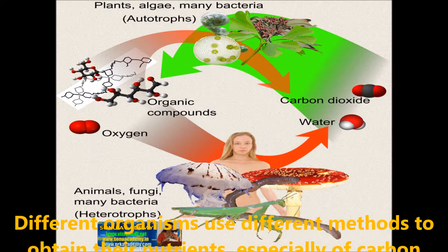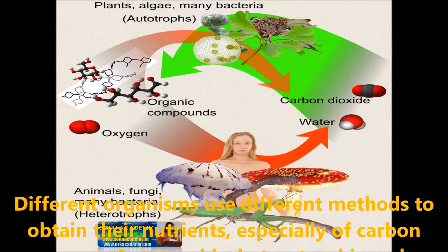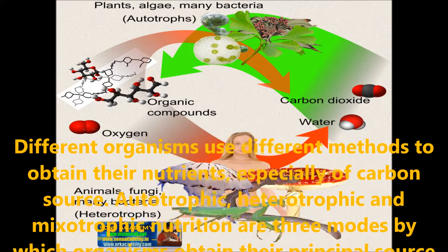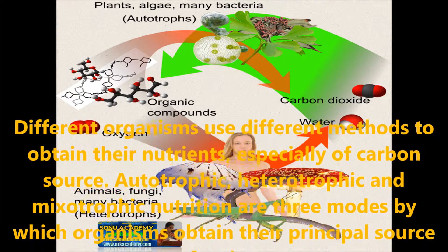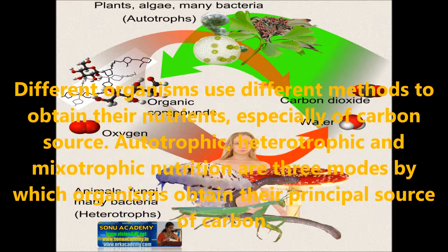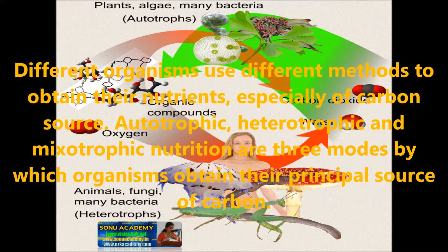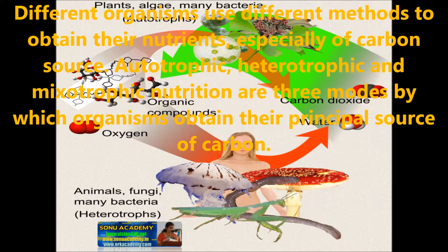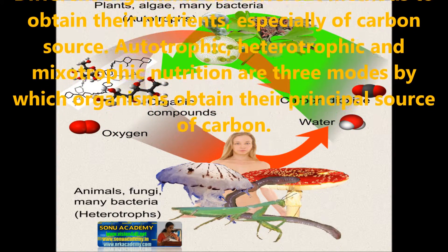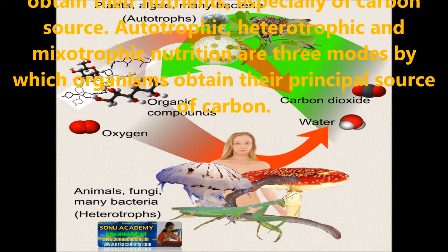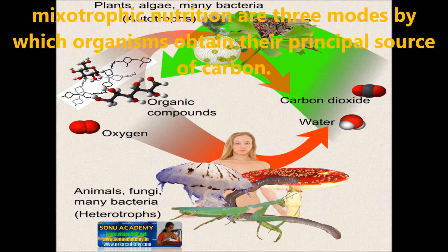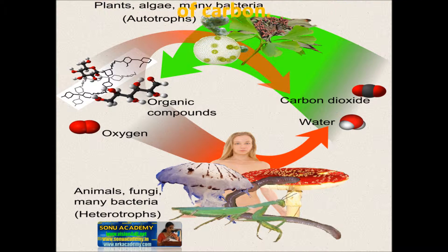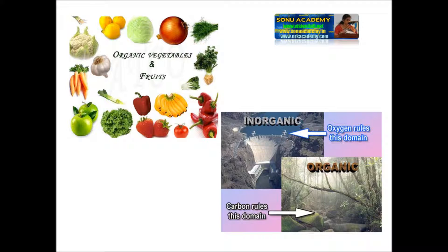Different organisms use different methods to obtain their nutrients, especially their carbon sources. These are autotrophic, heterotrophic, and mixotrophic nutrition — the three modes by which an organism obtains its principal source of carbon.